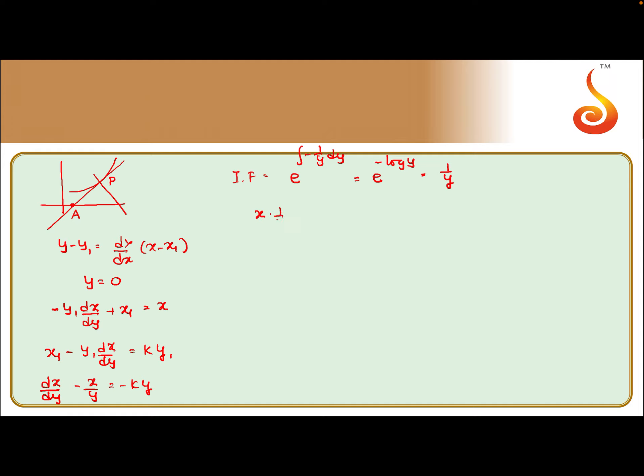So the solution: x times 1 by y equals integration of minus k by y dy. Because we are dividing by y, minus ky by y comes. So x by y equals minus k log y plus c.